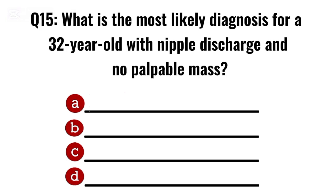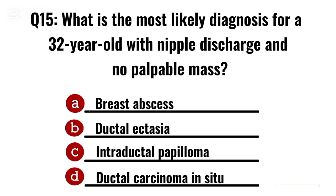Question 15. What is the most likely diagnosis for a 32-year-old with nipple discharge and no palpable mass? Correct option C: Intraductal papilloma.